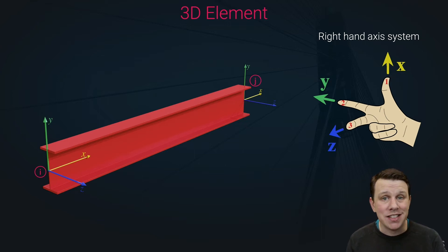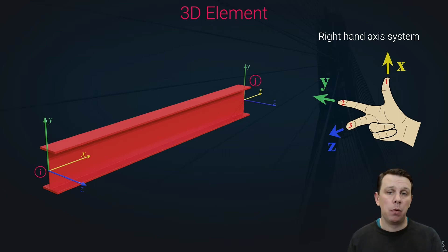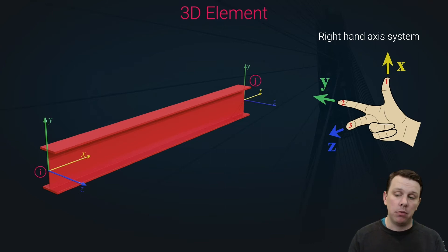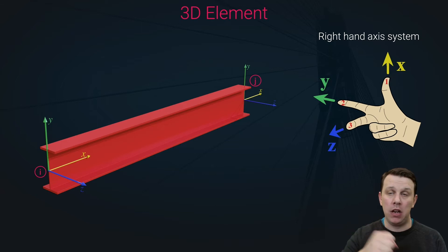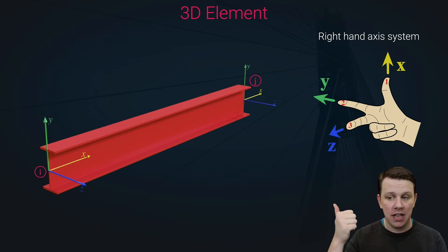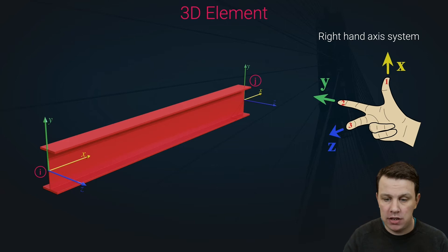Your middle finger points in the direction of the z-axis. So the thumb and two fingers of your right hand are essentially a model for the axis system applied at each node. A useful way to remember it: x, y, z correspond to thumb, index finger, and middle finger — or one, two, three. This right-hand axis system predicts the axes at each node of the 3D member.